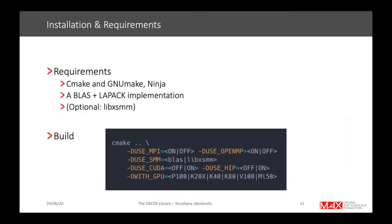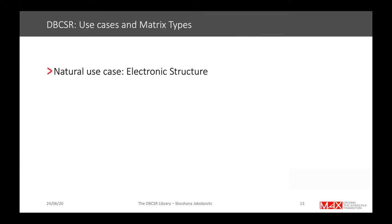DBCSR is relatively easy to install with few requirements: CMake and either GNUmake or Ninja, a BLAS or LAPACK implementation — preferably one optimized for your system — and optionally LibxSMM, a specialized library for Intel processors. You need a Fortran and C++ compiler, and optionally CUDA or HIP compilers for GPU backends. You build with a relatively simple CMake command with options.